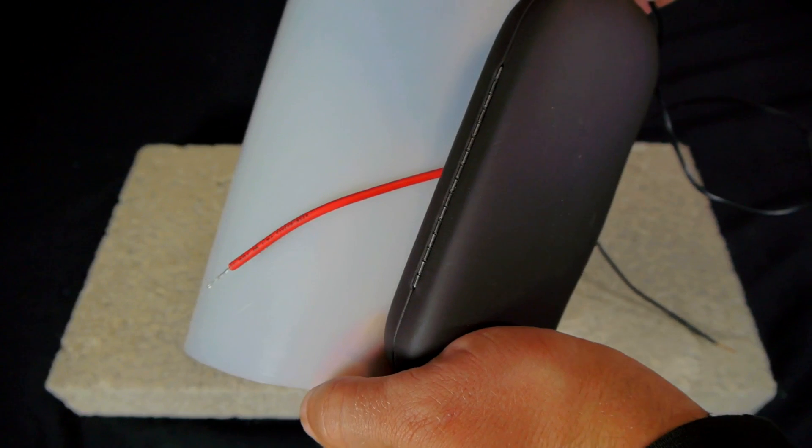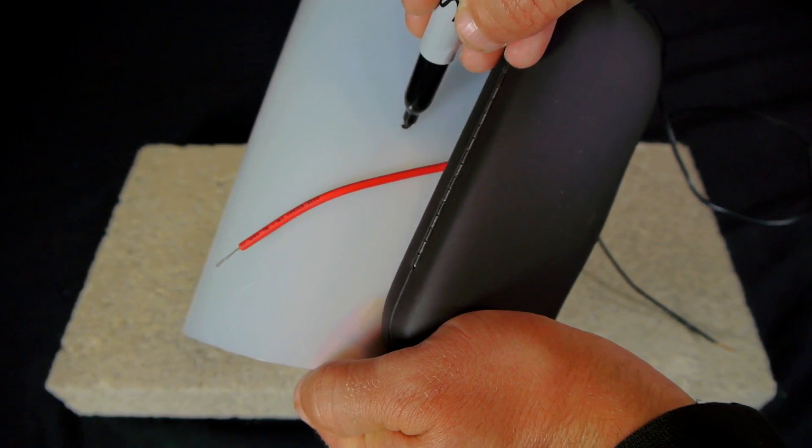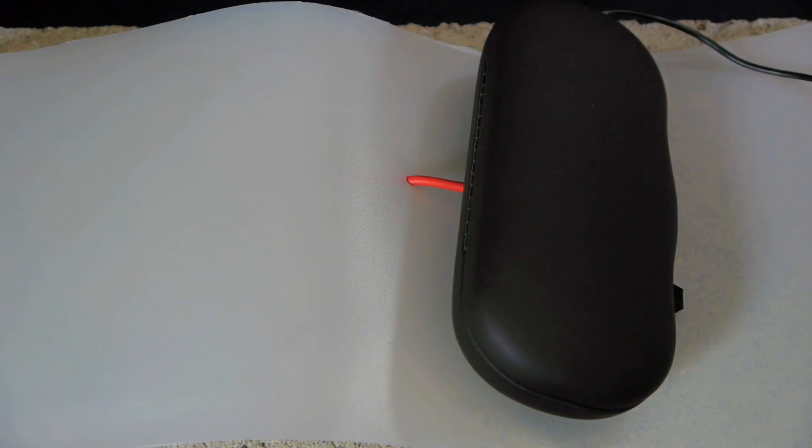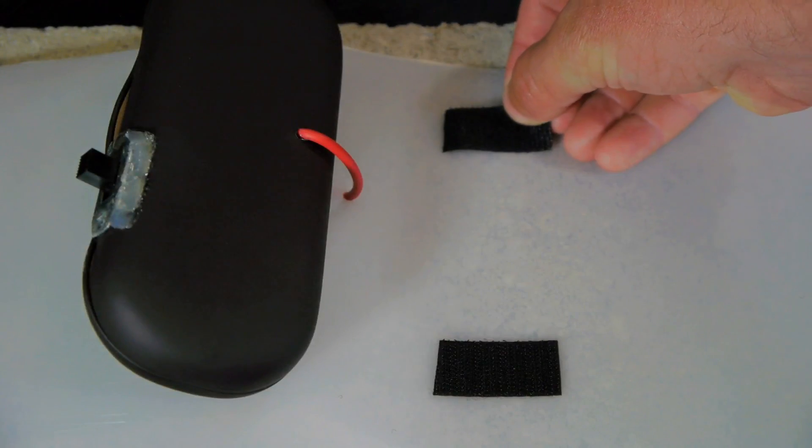The glasses case is then lined up on the back side of the sleeve and a mark is placed about a half inch in front of the red wire. A hole is drilled through this mark and the wire extends through it. With the case lined up how we want it we can now attach it to the sheet with two strips of sticky side velcro.